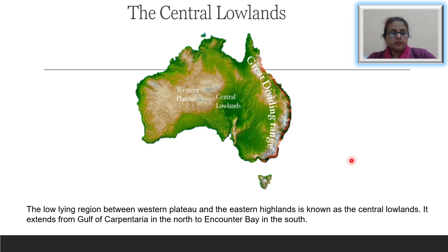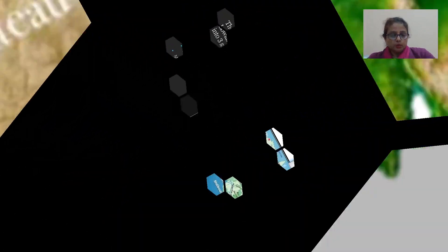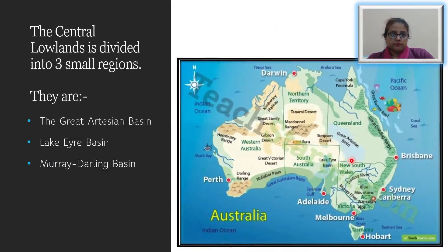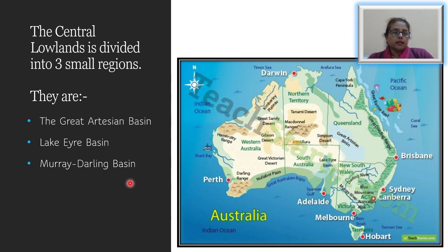The Central Lowlands can be divided into three smaller regions. They are: the Great Artesian Basin, which mostly occupies parts of southwestern Queensland; the Lake Eyre Basin, found in South Australia; and the Murray-Darling Basin, found in the southeastern part of Australia. Now let us learn about each of these three important regions.